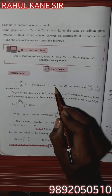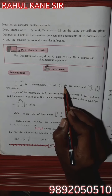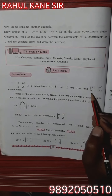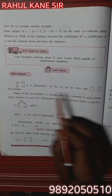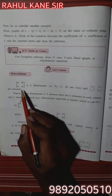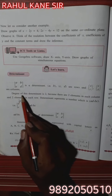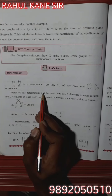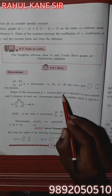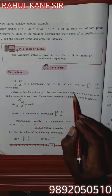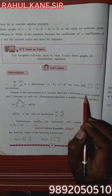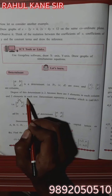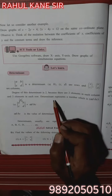A and B, C and D are rows, and A, C, B, D are columns. The degree of this determinant is 2 because there are 2 elements in each column and 2 elements in each row.